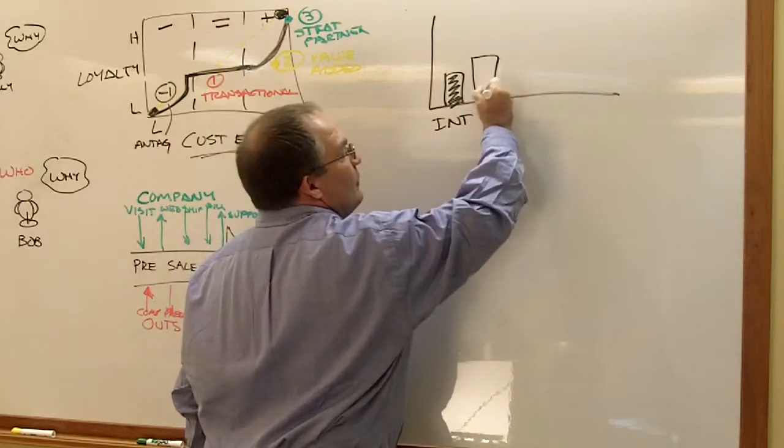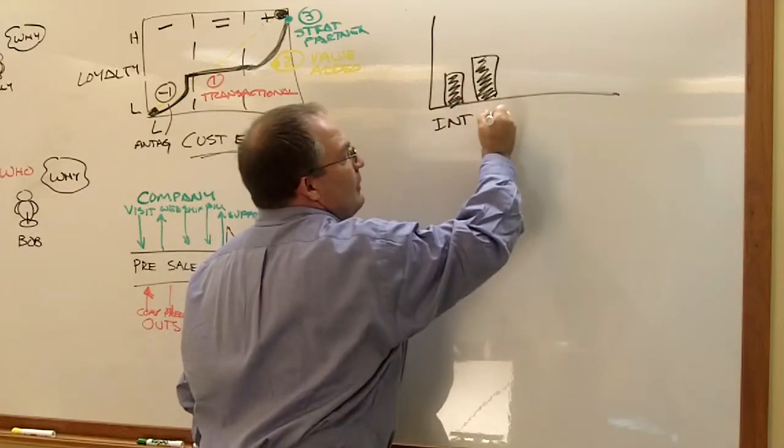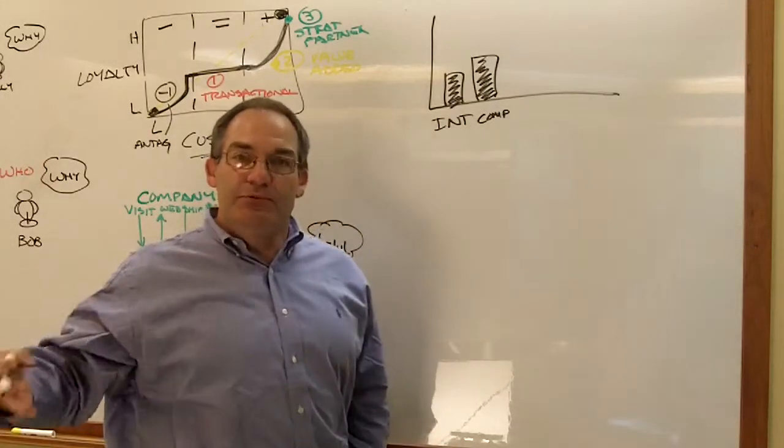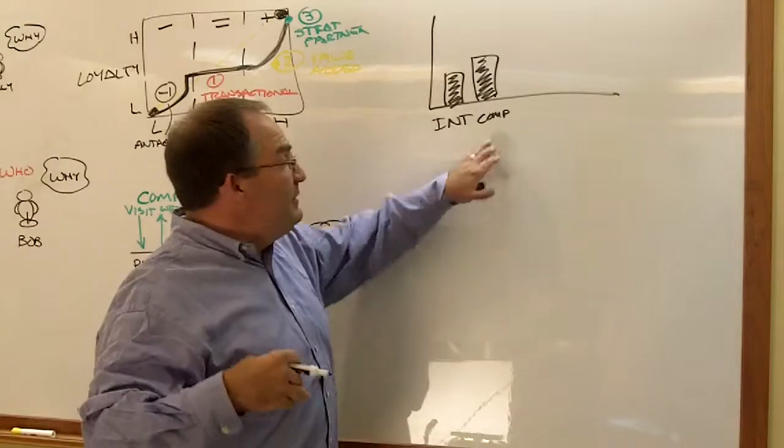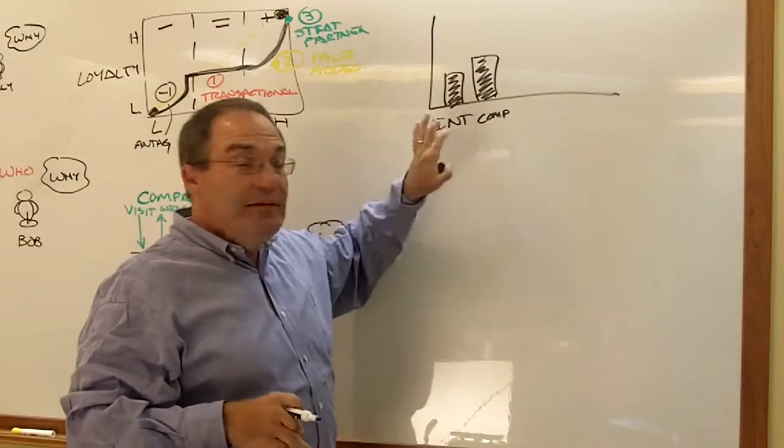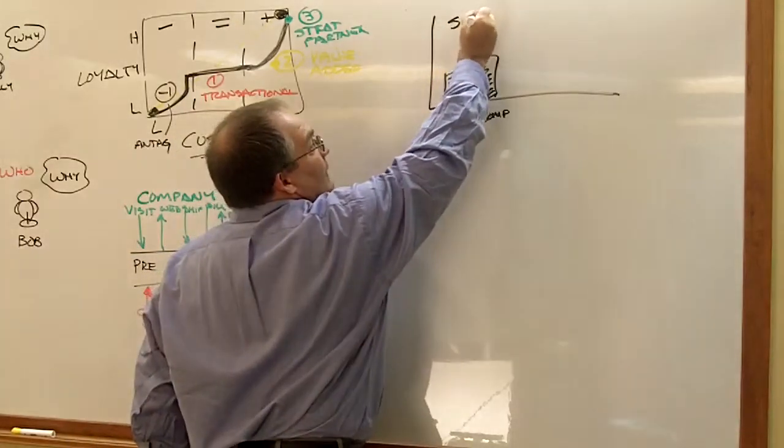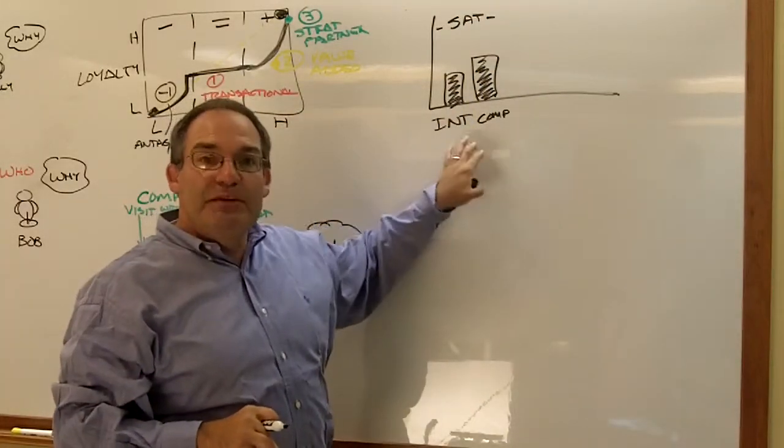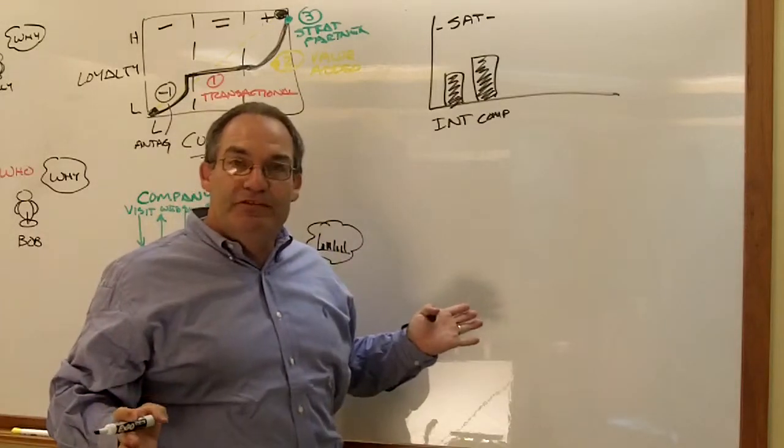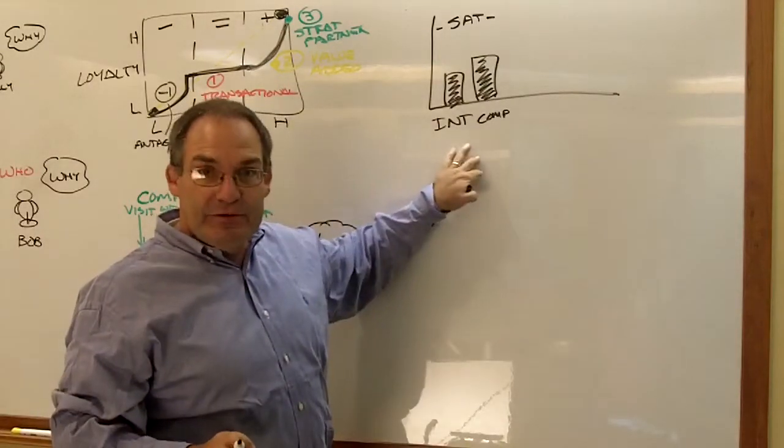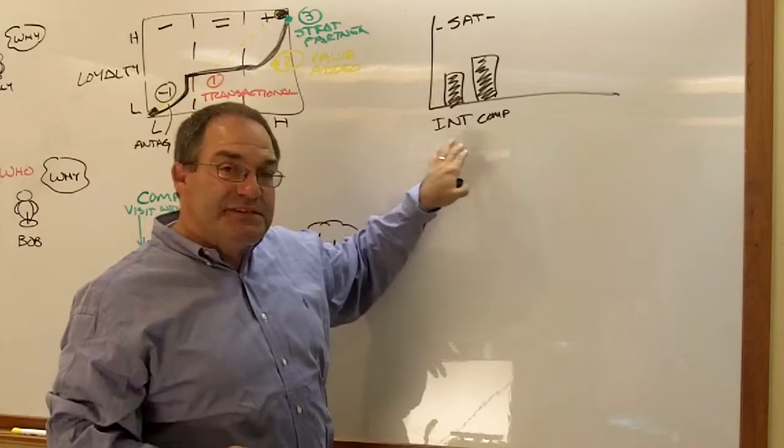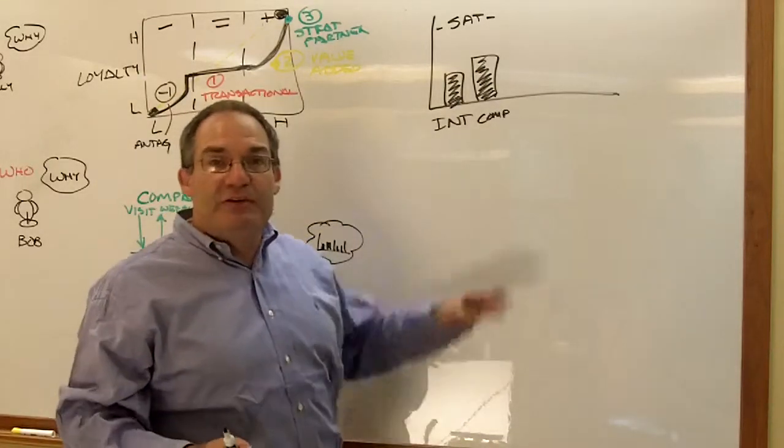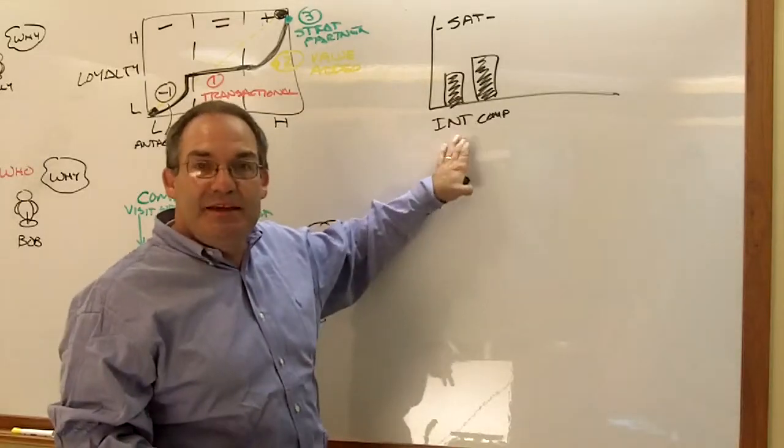The second thing they're looking for from you is what we call competency. Competency is do they believe you have the people, the skills, the tools, the experience to actually deliver what you've promised them. These two are the basic satisfiers. To be quite honest, if you can't deliver what you've promised them when you've promised them, you have no basis for an ongoing relationship with them. But simply doing these two things isn't enough anymore. Pretty much every one of your competitors can do those things. That's the ticket to the game.